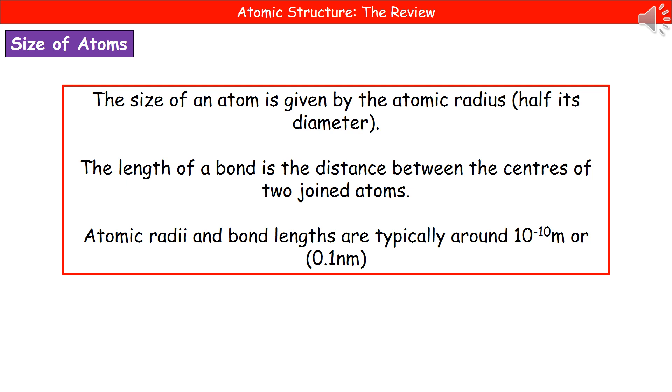And what we tend to find is that when we look at atomic radii and the bond lengths, they're both typically around 10 to the power minus 10 metres, or we could write that in a different way of 0.1 nanometres. But do remember that number because it does seem to be something that the exam board are quite keen on in any of their practice material. So your typical size of an atom is 10 to the power minus 10 metres.